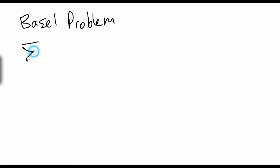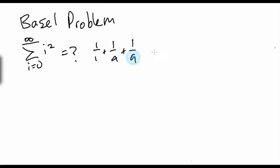Hey guys, Ron here, back with another math video. Today we're going to be doing the Basel problem. The Basel problem is basically the sum from i=1 to infinity of 1/i². What does this expand into? This is just 1 over 1 plus 1 over 4 plus 1 over 9, and so on up to 1 over infinity squared. What does this equal? This series does converge — it is a value.